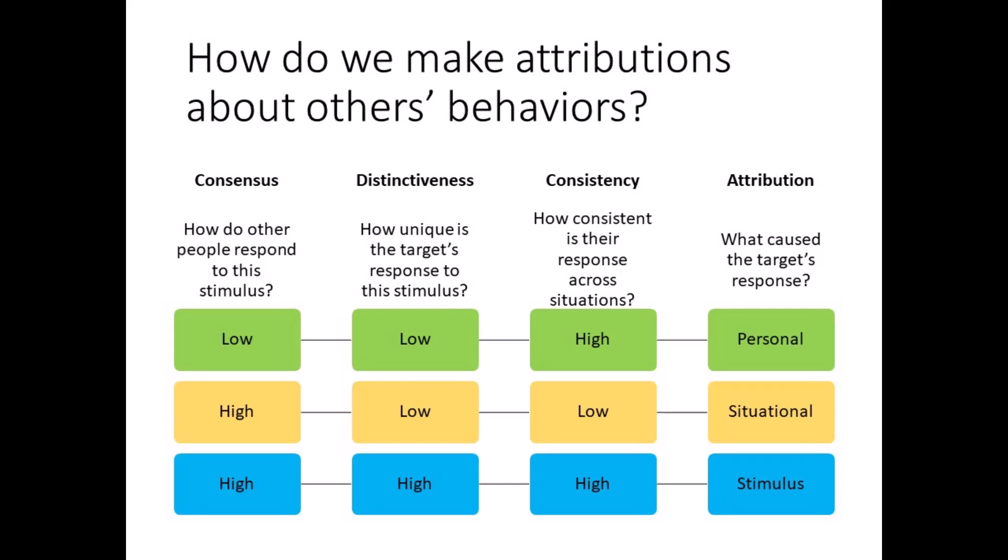And third, consistency refers to how often the target responds this way in other situations. Low consistency means the target's behavior is not typical for them in other situations. High consistency means this is how the target normally behaves in other situations too. Generally speaking, we tend to make personal attributions when consensus and distinctiveness are low and consistency is high. We tend to make situational attributions when consensus is high and distinctiveness and consistency are low. We tend to blame the stimulus when all three variables are high.